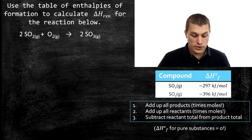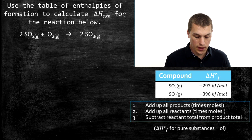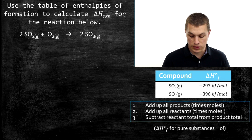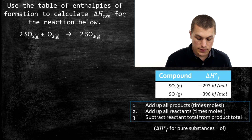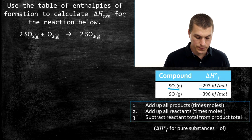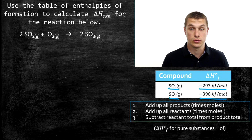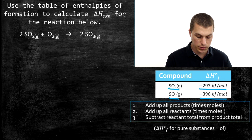The problem says: use the table of enthalpies of formation to calculate the enthalpy of reaction for the reaction below — which is the same one we just talked about. The table gives us critical information: making sulfur dioxide releases 297 kilojoules per mole, and making sulfur trioxide releases 396 kilojoules per mole. Remember, we're making those from pure substances — that's the definition of enthalpy of formation.